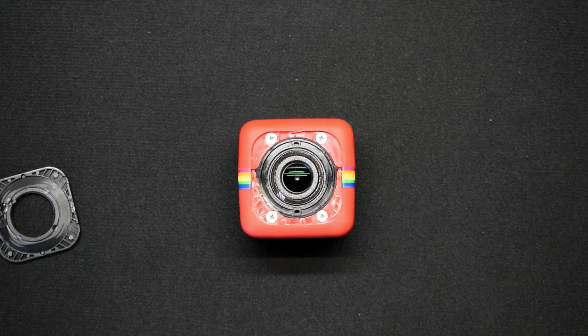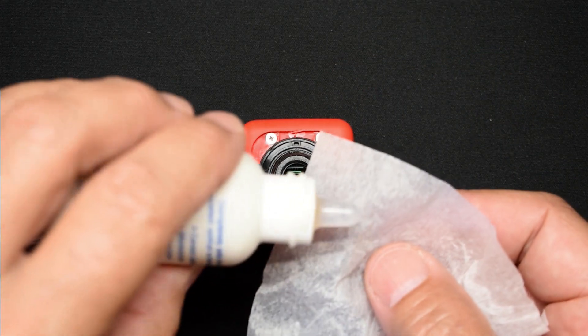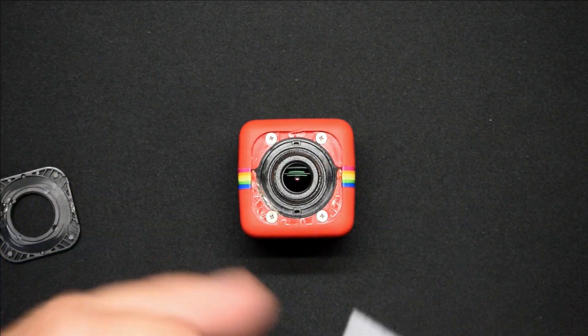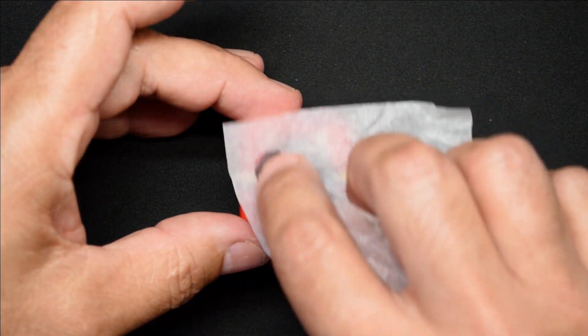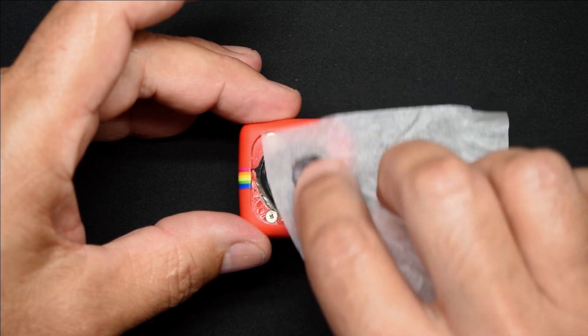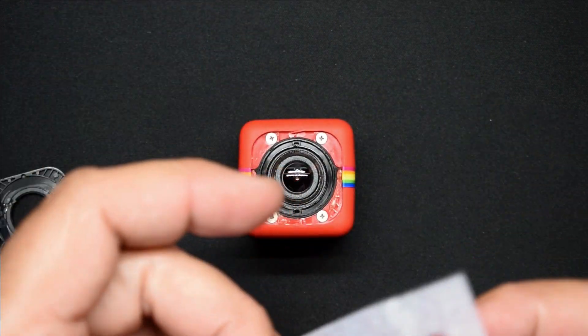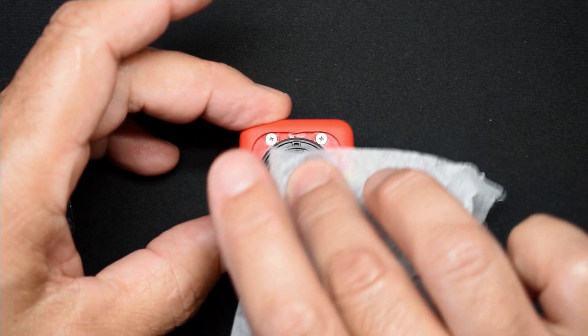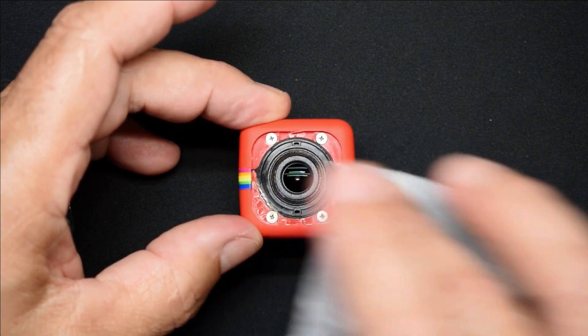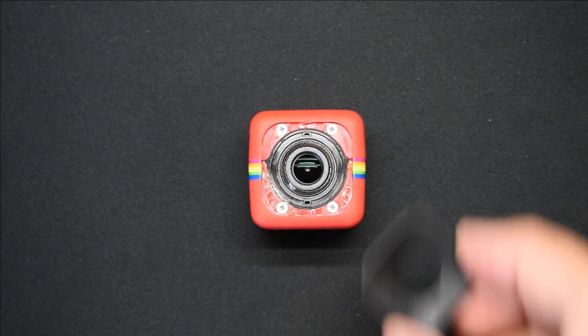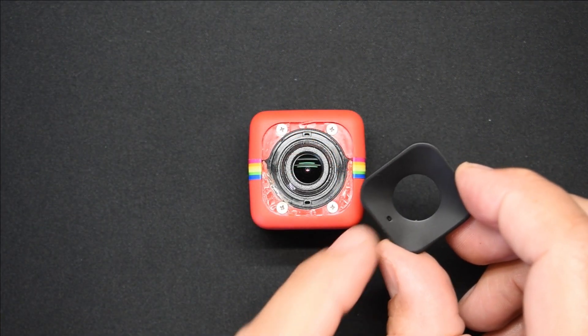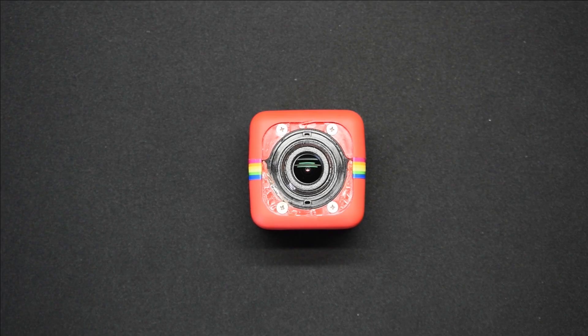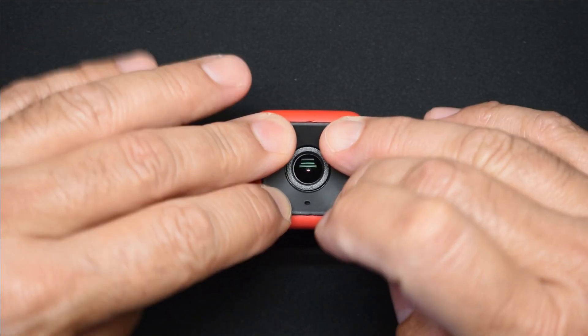Now back together. I'm going to get one drop on my lens tissue. Gently rub over the lens. That is ready. This goes back with the little microphone opening towards this end. And that is it.